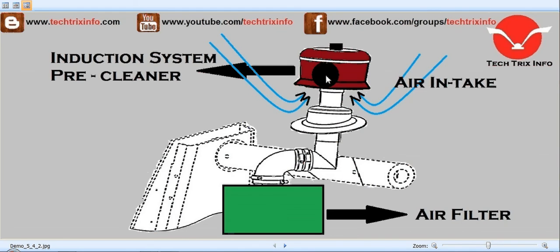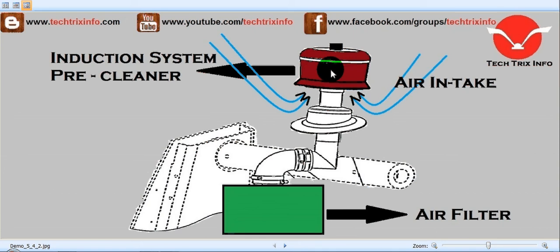This is the pre-cleaner, the unit which acts as the nose of the engine. It sucks air from the atmosphere through this region, as indicated by the arrow. It has a primary cleaning unit inside that cleans dust and other foreign materials entering from the atmosphere, and then the air is passed through this hose towards the air filter.